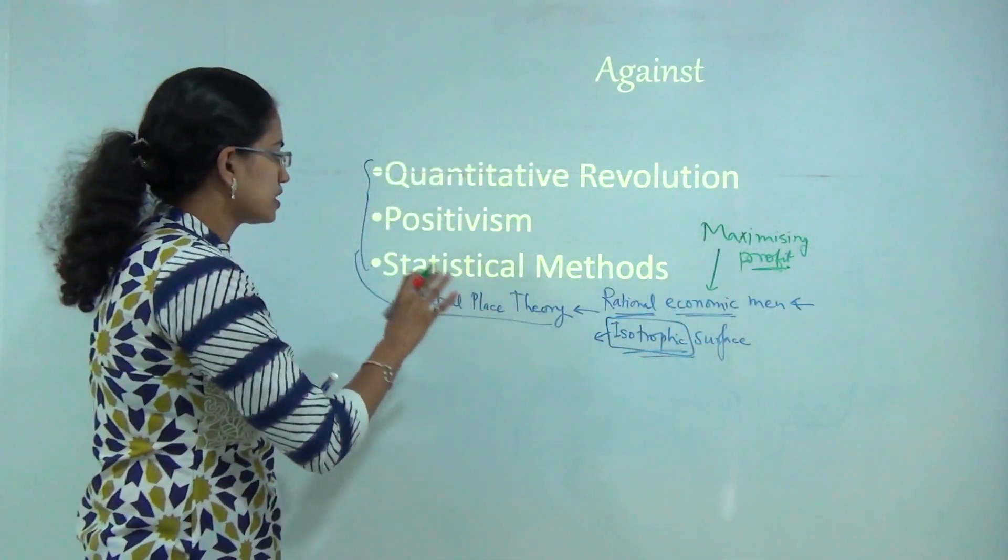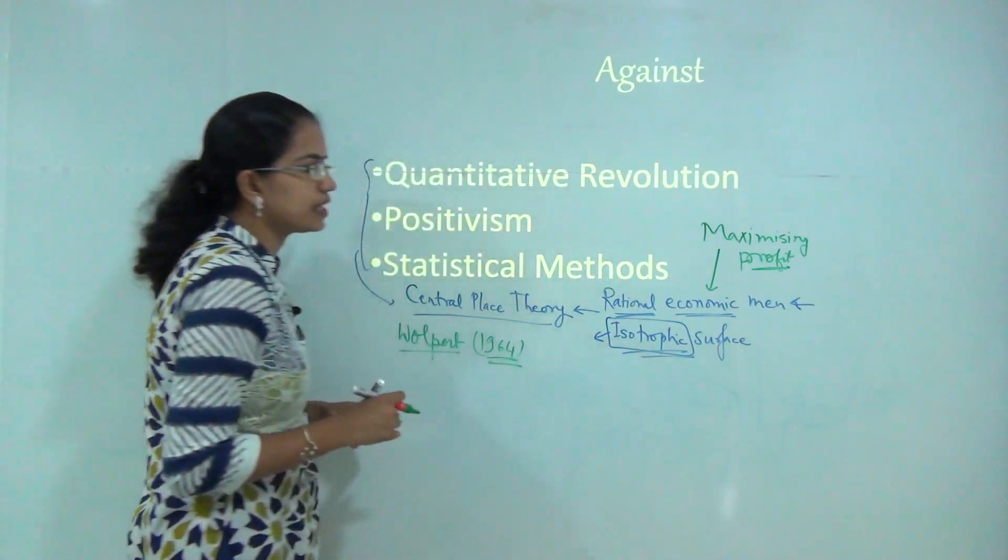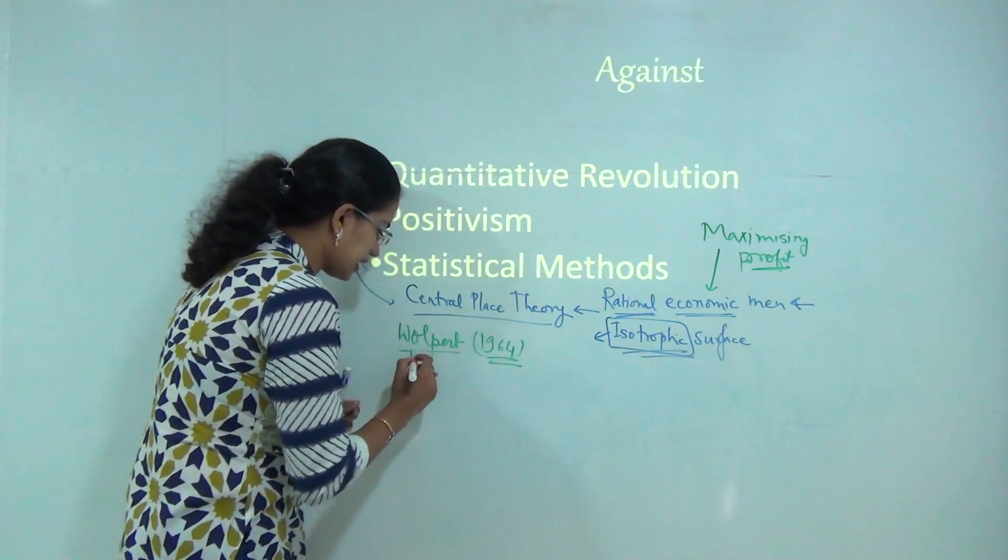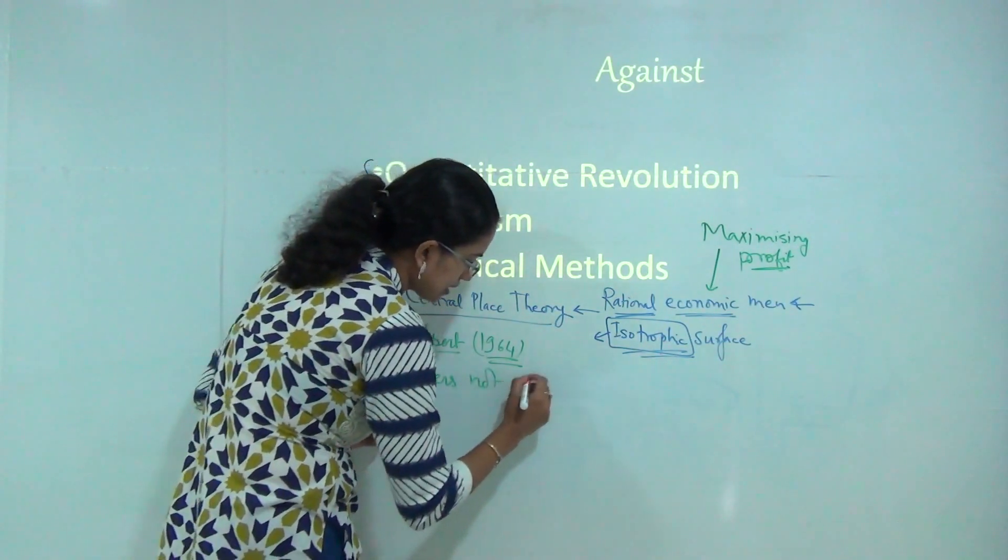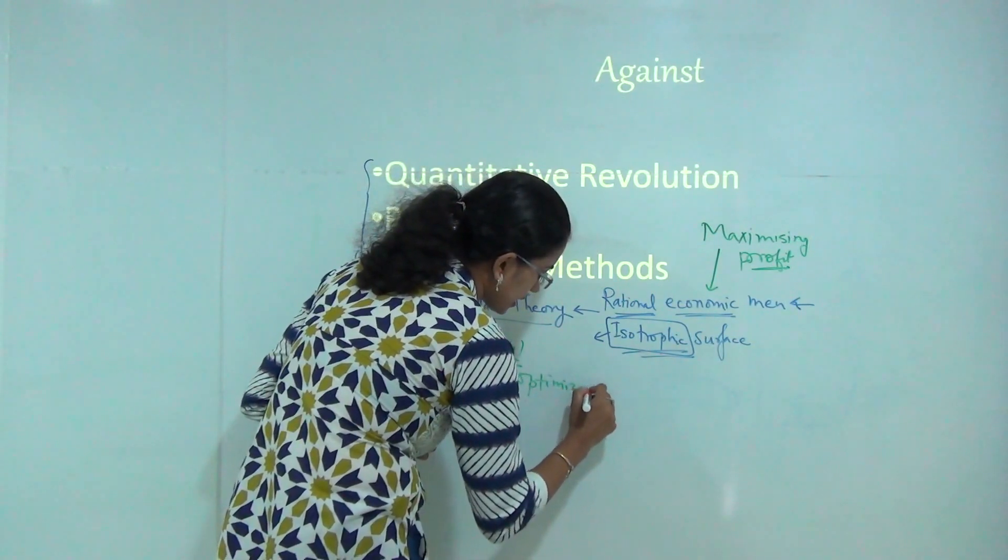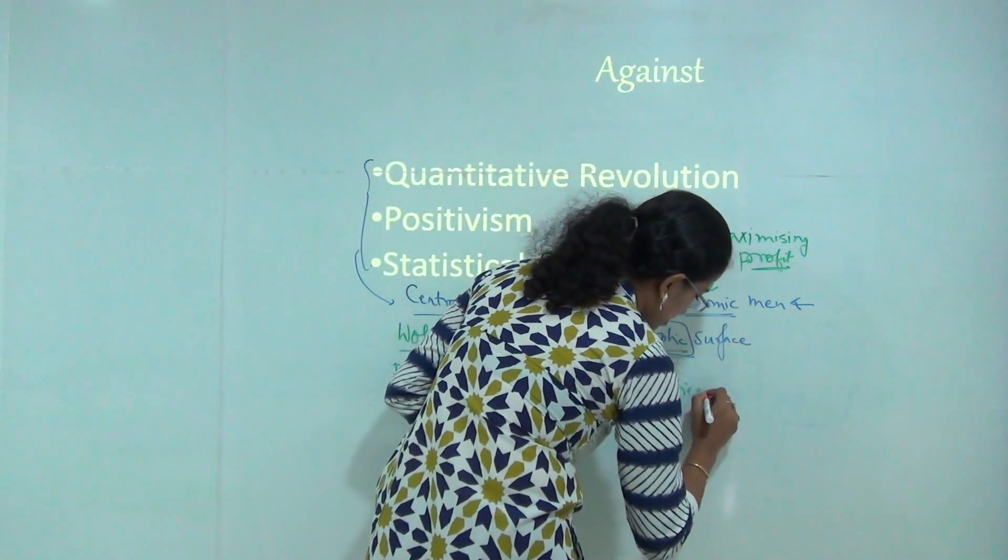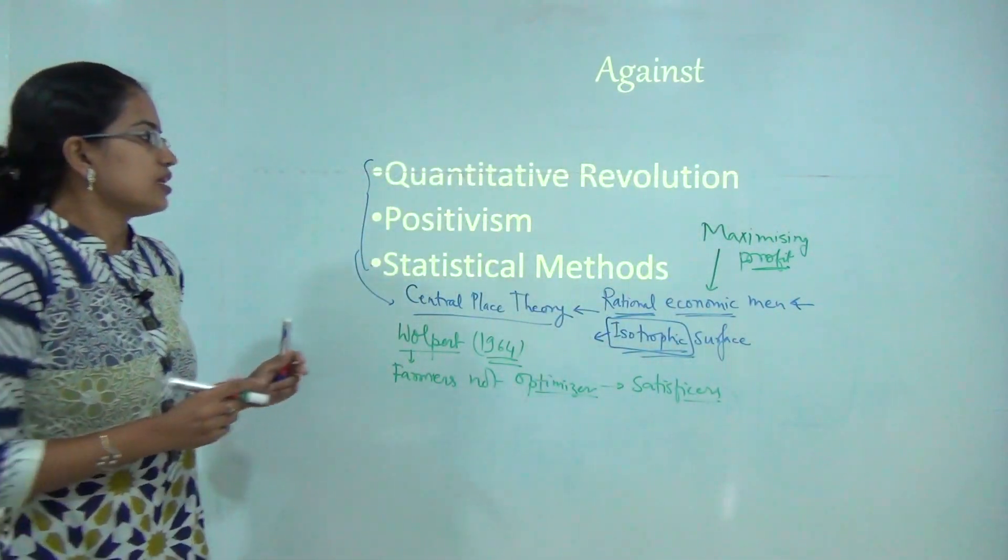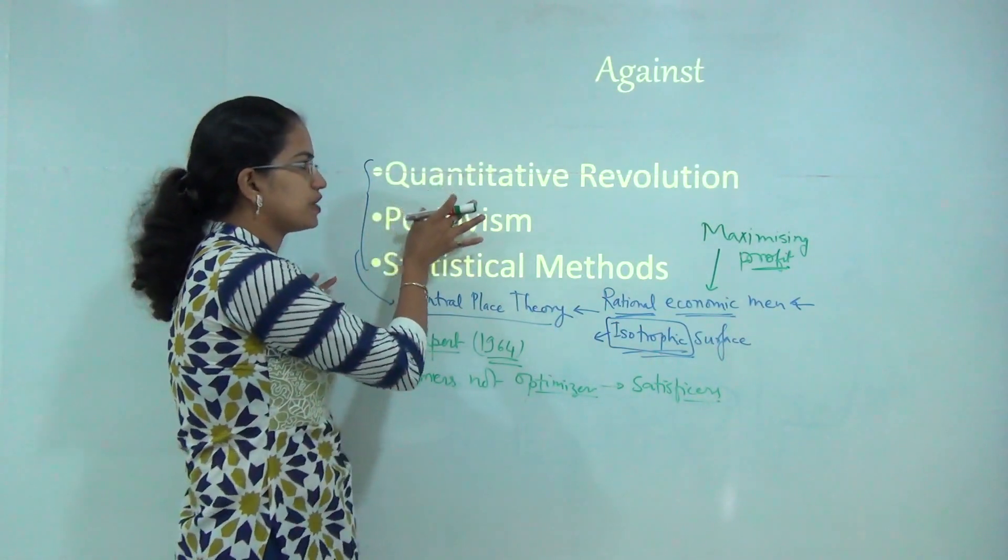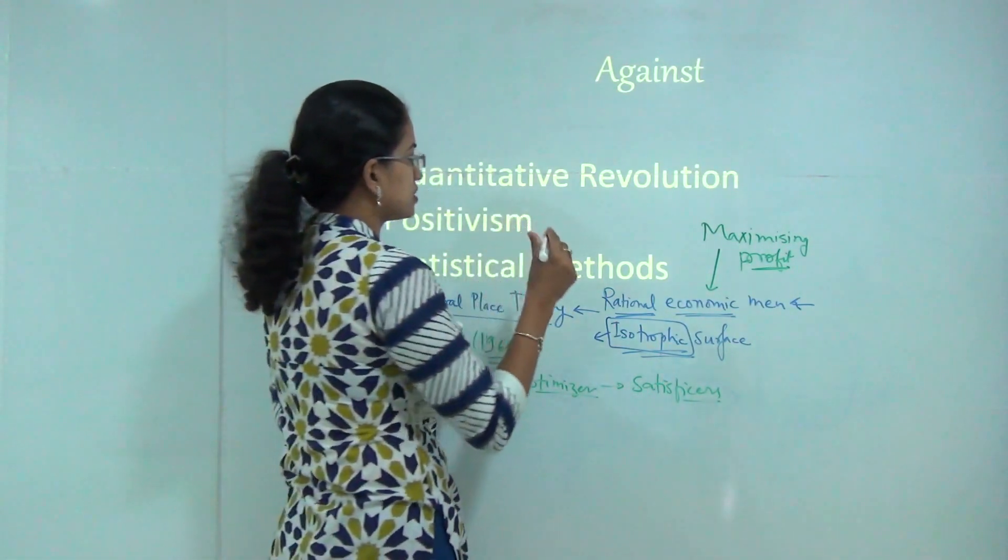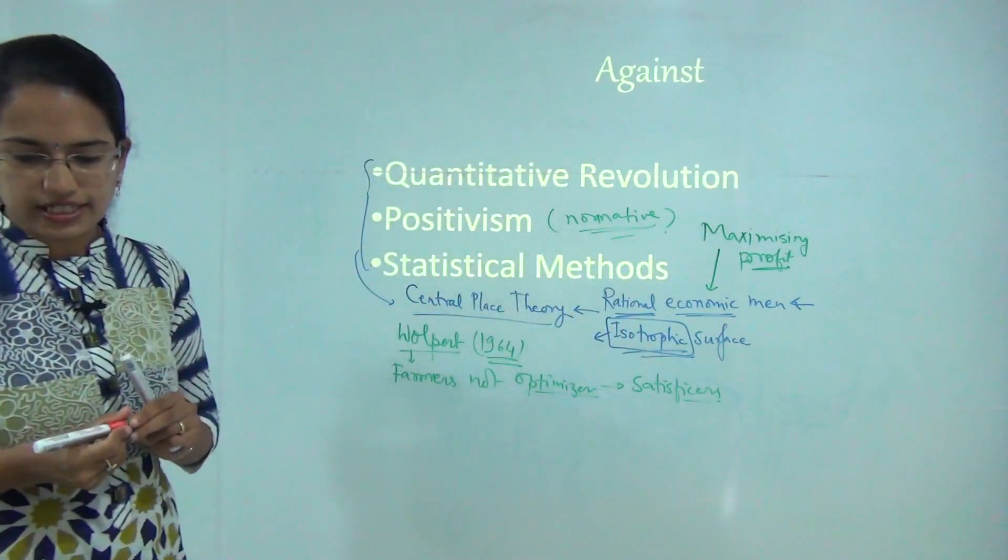This concept was wholeheartedly rejected by Wolpert. Wolpert in around 1964 challenged this concept and said in his case study that the farmers are not optimizers but satisfiers. Based on this theory, they would satisfy the needs and demands generated in the area rather than optimize production to reach maximum profit. This opposition laid the foundation for the behavioral approach.